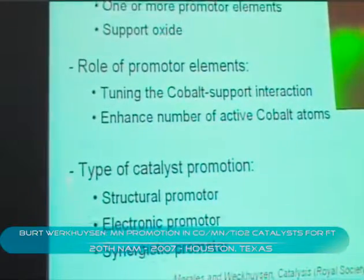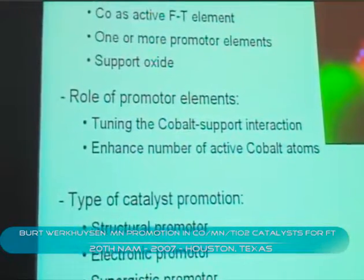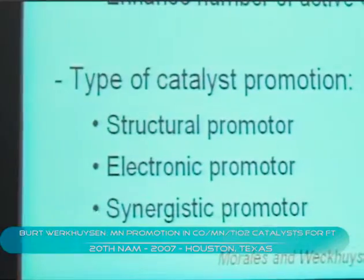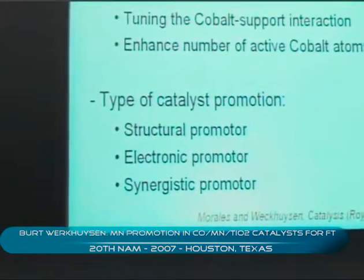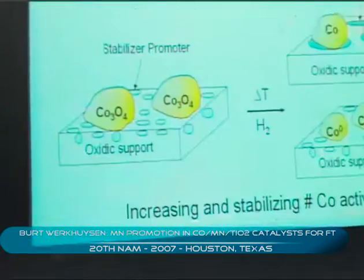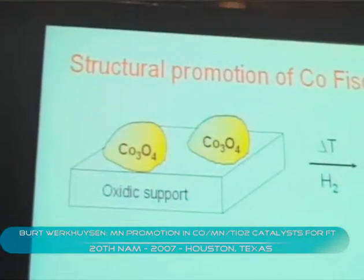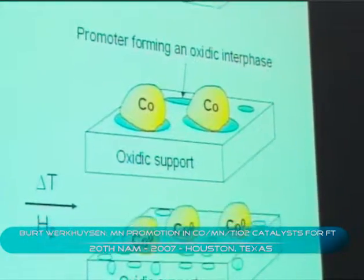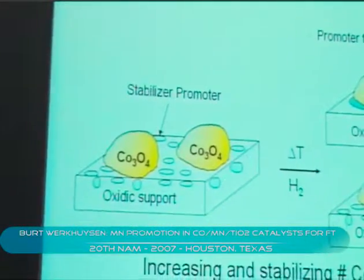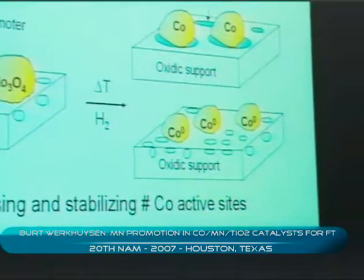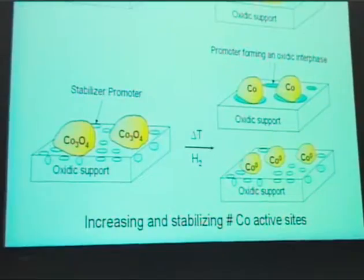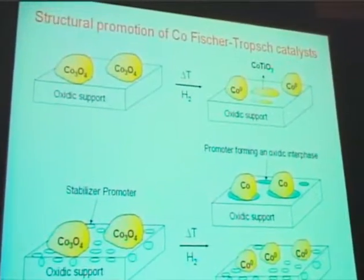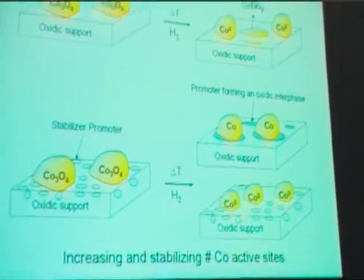Based on that, you can divide the catalyst promoters into three main groups: structural promoters, electronic promoters, and what I have defined as synergistic promoters. Structural promoters — for example, when you have cobalt formed on an oxide like titanium, then you reduce it, you can form cobalt titanate and cobalt metal particles. In order to control or reduce this formation, you can add promoters as stabilizers; they can act like a glue or prevent the titanium from migrating onto the cobalt, thereby enhancing the number of active cobalt sites.